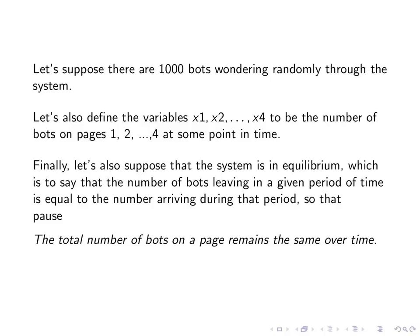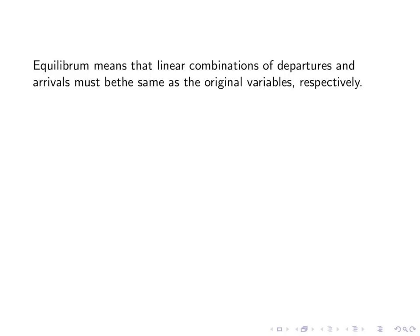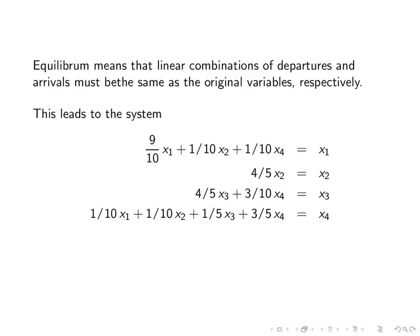We're also going to suppose that the system is in equilibrium. That is to say, the number of bots leaving a page in a given period of time will be offset by the number arriving during that period. So let's pause here. This is very important. The total number of bots on a page remains the same over time. Now equilibrium means that linear combinations must be the same as the original variable. So here's the after, and here's the before. So we have to have them the same because of equilibrium.